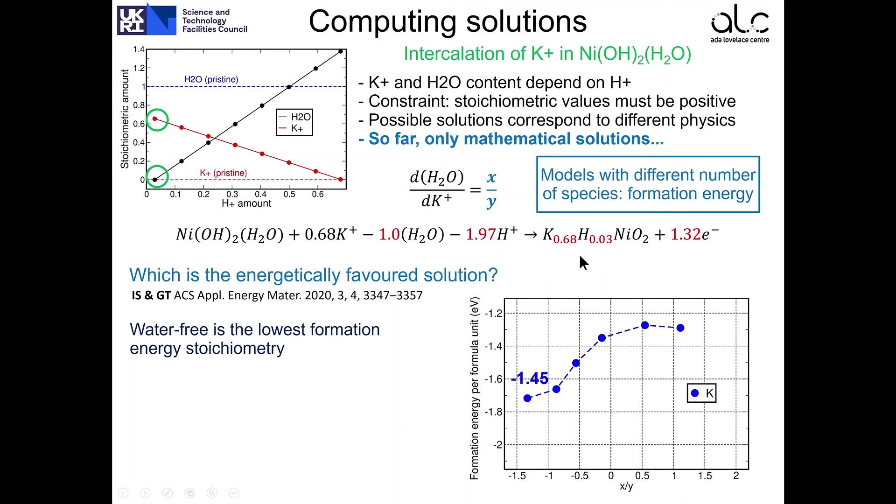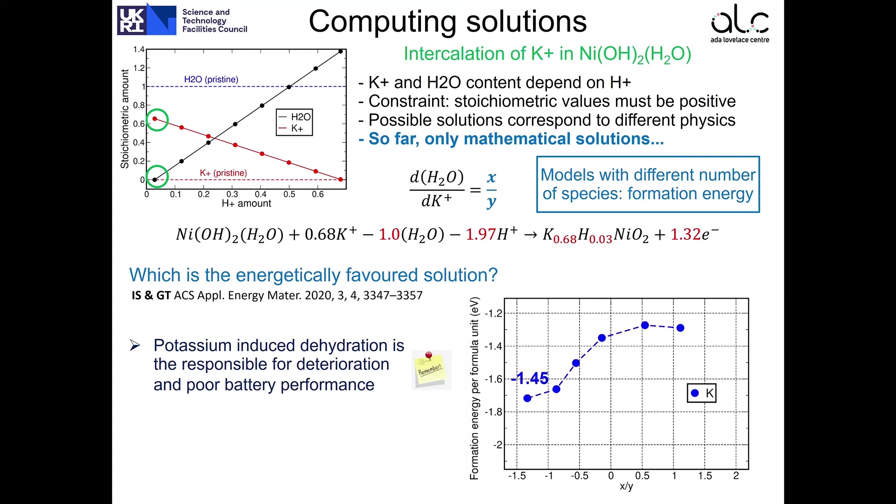So these results suggest that the intercalation of potassium removes completely the water from the sample. But if you remember, water is very important for this material because it helps to provide structural stability. You can also think about the reverse process when you want to de-intercalate the potassium. In this process, there will be regions of the materials that would be empty before water and protons can be reinserted back. Therefore, the material will lose structural stability and will be prone to undergo this alpha to beta transition that we discussed before. So we learned that the potassium-induced dehydration is responsible for the deterioration and poor battery performance.